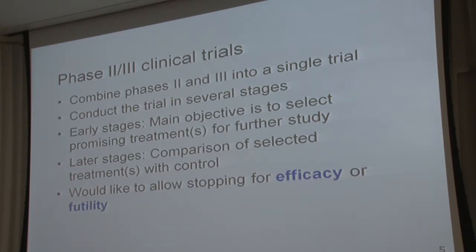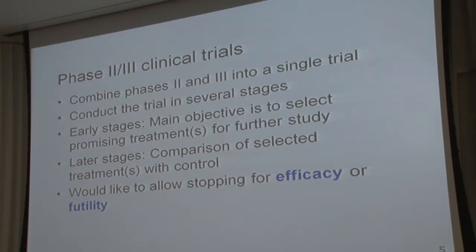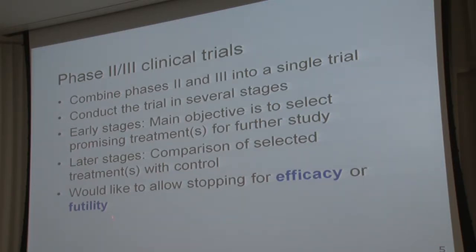Phase two-three clinical trials do exactly what they should — they look to combine phases two and three into a single trial. These trials can be conducted in several stages; a lot of times people talk about two-stage designs. The most general framework we can envisage has one or more early stages where the main objective is to select promising treatments, then later stages where we compare the selected treatment or treatments with a control. We'd like to include possibilities of stopping both for efficacy and also stopping for futility.